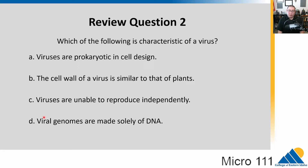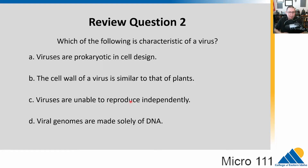Go ahead and pause the video and think about that one. The answer would be C, viruses are unable to reproduce independently. This one's a little tricky. There are parts of this that sound correct but are factually incorrect. A — viruses are prokaryotic in cell design — they don't have cells, they're acellular. So A is out.